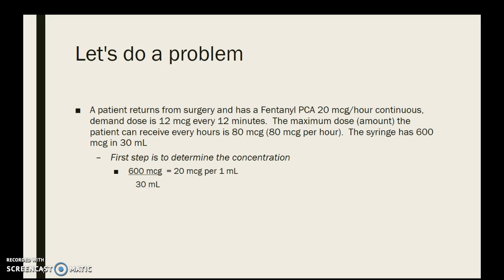Now we're going to do a problem. A patient returns from surgery with a fentanyl PCA: 20 micrograms an hour continuous, demand dose is 12 micrograms every 12 minutes, and the maximum dose the patient can receive every hour is 80 micrograms. The syringe has 600 micrograms in 30 milliliters. The first thing we do is look at the concentration: 600 micrograms divided by 30 milliliters equals 20 micrograms per milliliter. So if a patient gets one milliliter, they've received 20 micrograms.